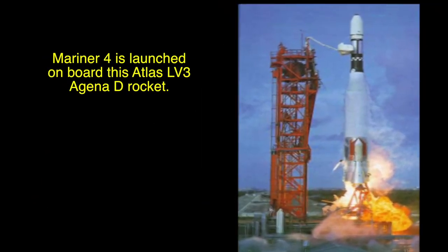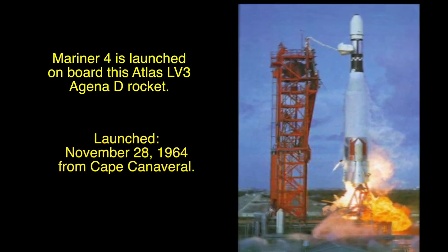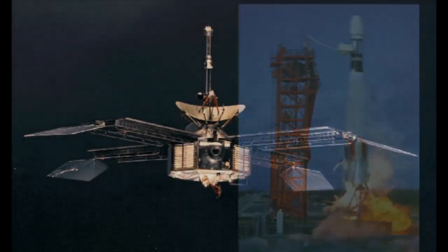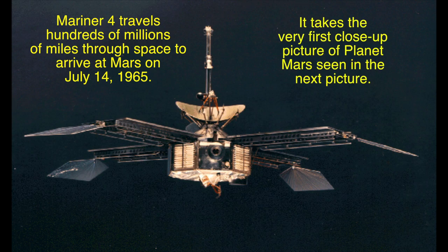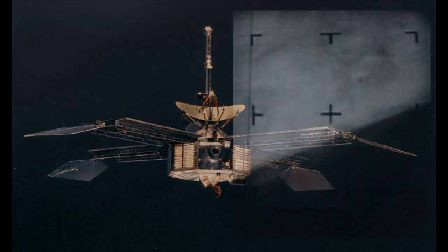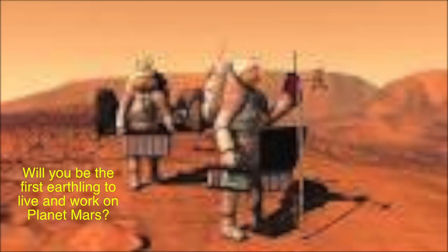Mariner 4 was launched on board an Atlas LV-3 Agena D rocket on November 28, 1964 from Cape Canaveral. Mariner 4 travels hundreds of millions of miles through space to arrive at Mars on July 14, 1965, taking the very first close-up pictures of planet Mars. But the big question is: will you be the first Earthling to live and work on planet Mars?